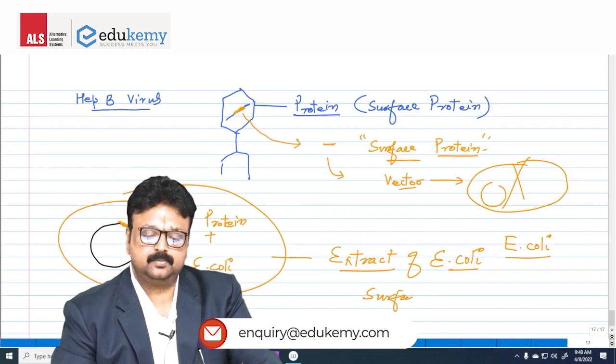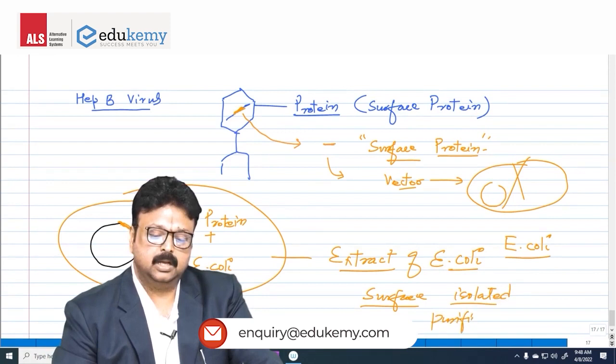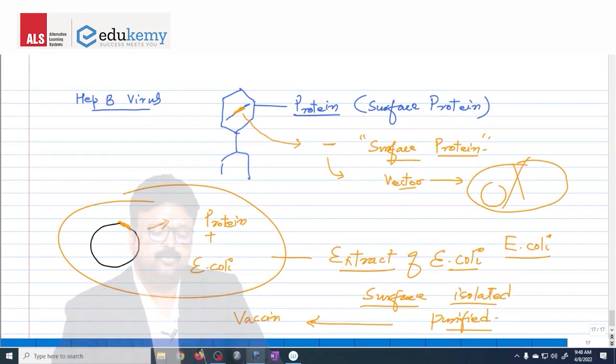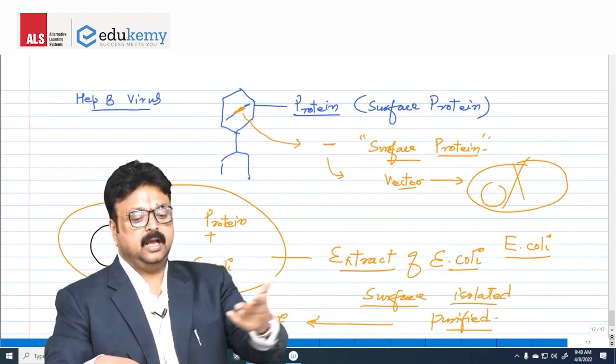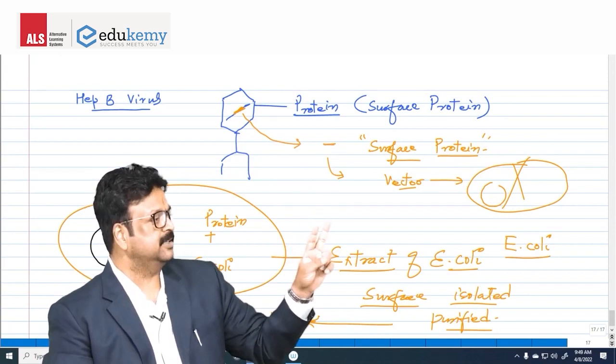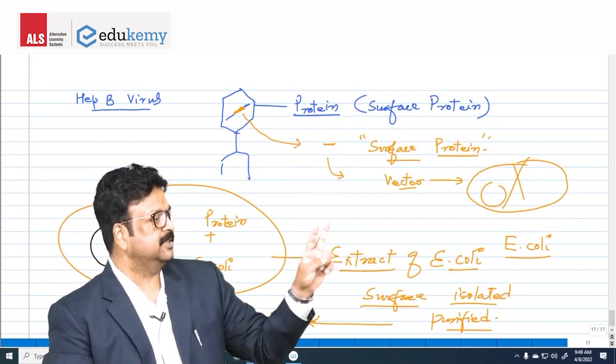This surface protein is now isolated, purified. You have used this surface protein as vaccine. Now this protein will enter inside. And if anyone comes wearing such protein, that antibody will kill them. Answer is yes. And you are using this recombinant DNA. What is recombinant DNA? DNA of two organisms or more than one organism is recombinant DNA. And this is recombinant DNA vaccine.